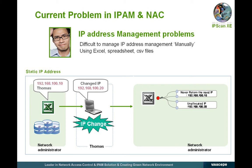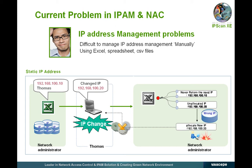Meanwhile, the administrator, uninformed of this change, will consider Thomas' IP address as .10, and .20 is one that can be assigned to someone else. If the administrator assigns .20 to a newcomer, then he or she will encounter inaccessibility to the network due to IP conflict. As the administrator does not know who is using .20, he has no choice but to assign another IP. As a result, the IP .10 cannot be assigned to anyone, while .20 will be an unknown IP that cannot be assigned to anyone.